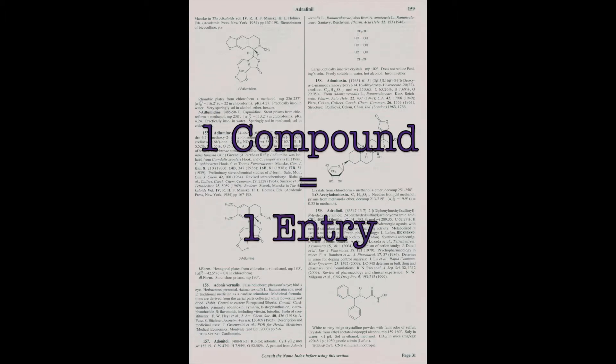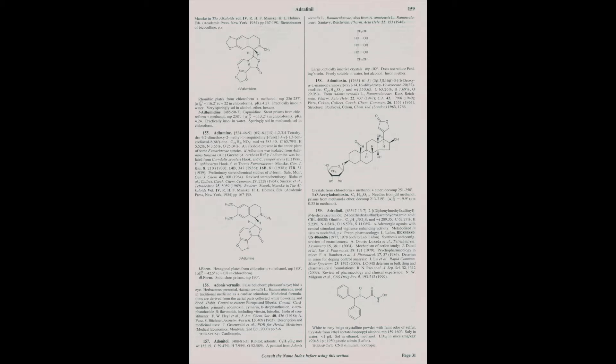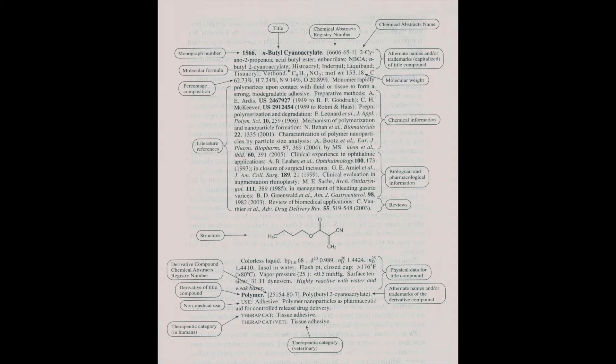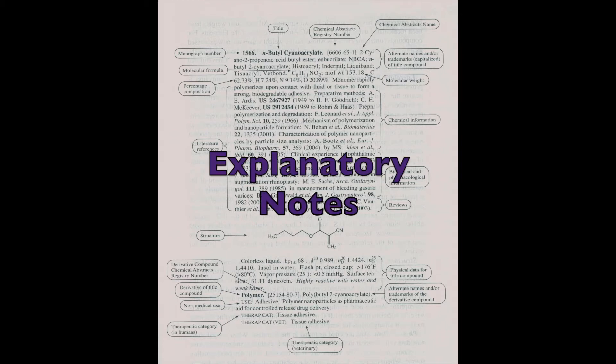In the Merck, each compound has a single entry. Each entry includes physical data for the compound and often the structure is represented. Because space is limited, information is packed together and abbreviated. Don't despair if the entries look indecipherable at first. The Merck has a page at the beginning of each edition called explanatory notes that clarifies how information is arranged within each entry.